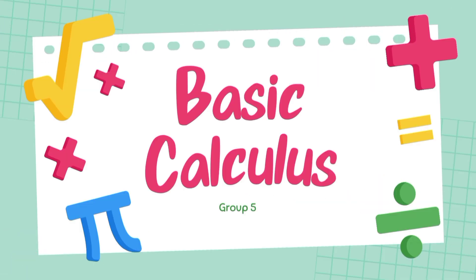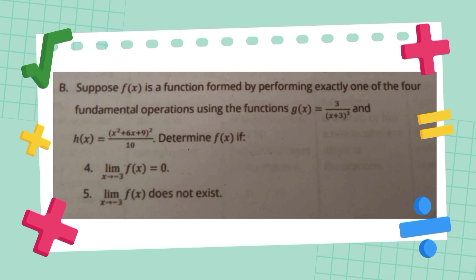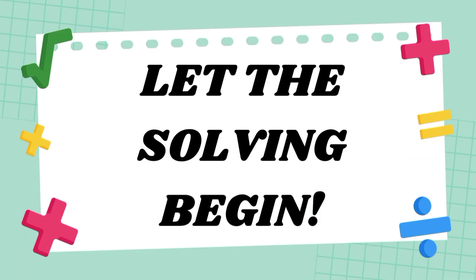Good afternoon, sir and fellow students. We are to present the given problem by Sir Ragon. For Letter A, we will verify if the following limits exist. For Letter B, suppose f of x is a function formed by performing exactly one of the four fundamental operations using the functions g of x and h of x — determine if f of x equals C or the limit does not exist. Now let the solving begin.